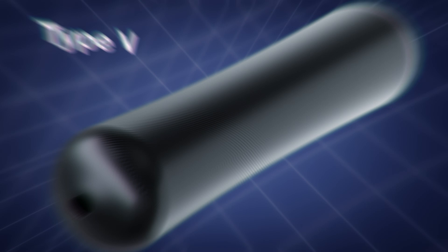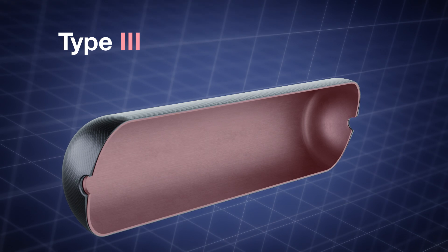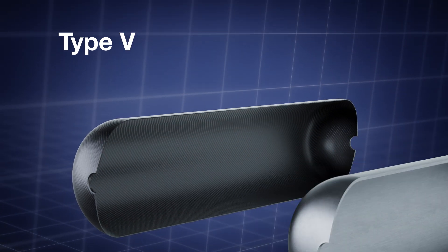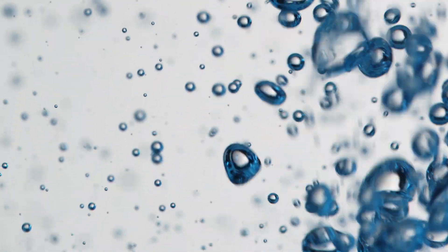As a type 5 tank, it is fully composite, reducing mass by 30% and eliminating the need for a metal liner. It is compatible with liquid oxygen, ensuring safe storage without the risk of ignition and chemical reaction.